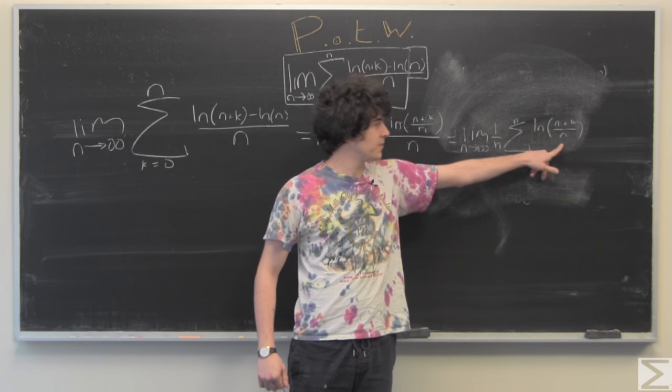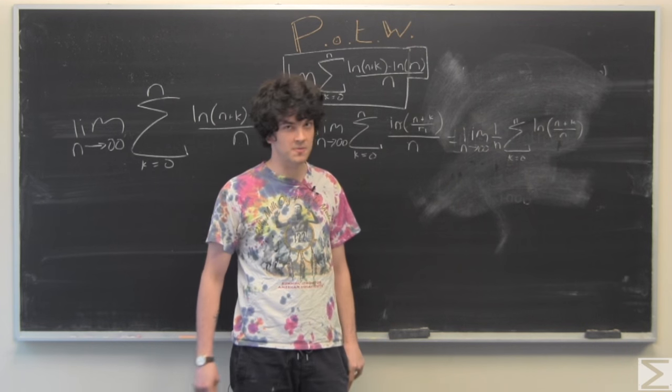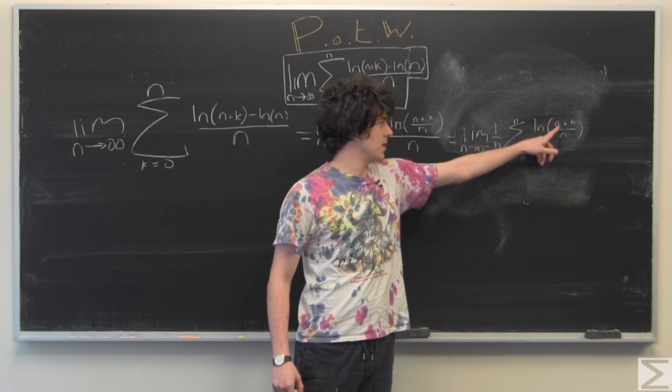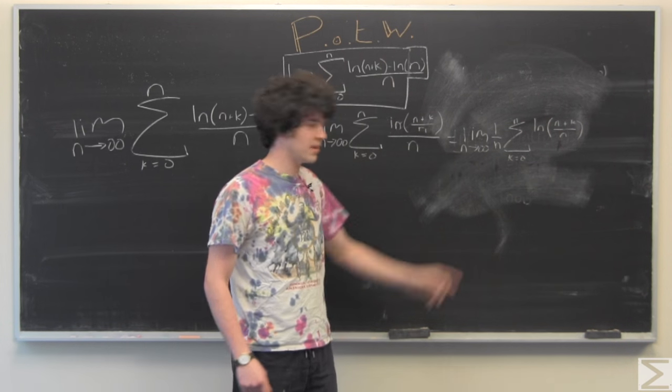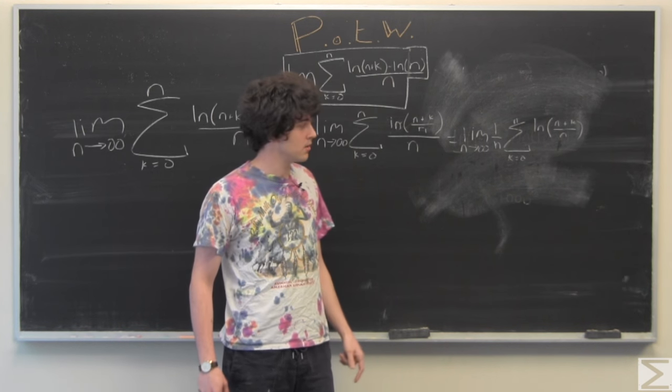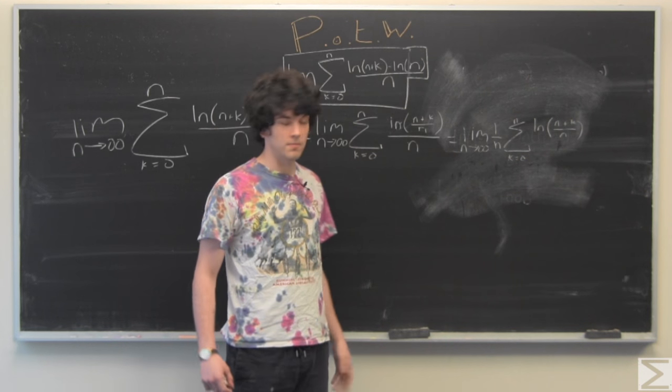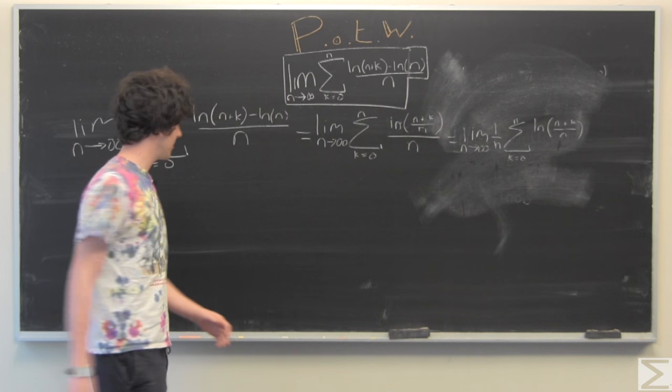And we can also simplify the term inside the natural log by simplifying the fraction. It will help to notice that we have n over n plus k over n, and the n over n of course is just 1. So it's always good to have 1s in our problem because 1s are nice.